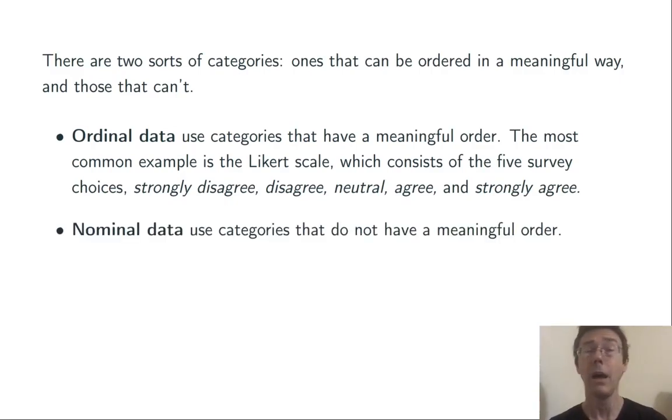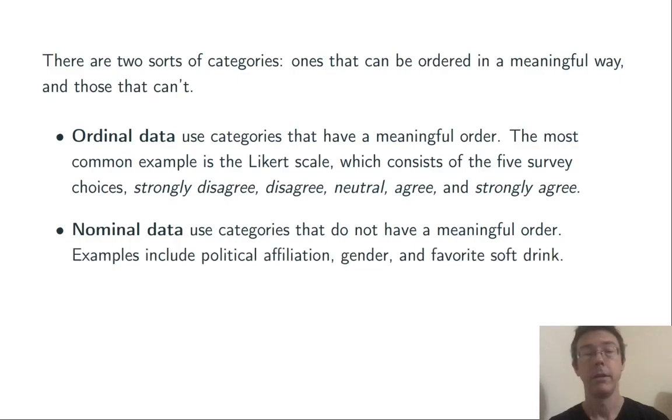On the other hand, nominal data uses categories that do not have a meaningful order. For example, political affiliation, gender, and favorite soft drink. While we could impose an order on those, that would be completely arbitrary and based on our own opinions.